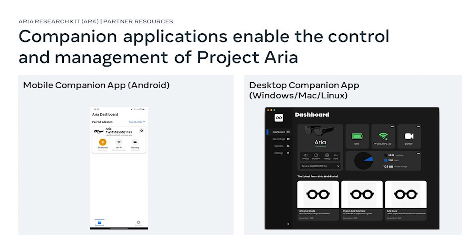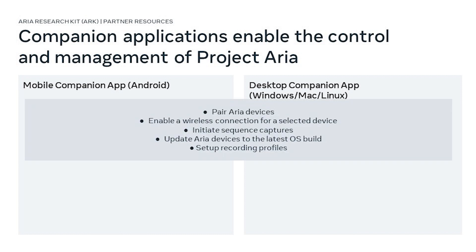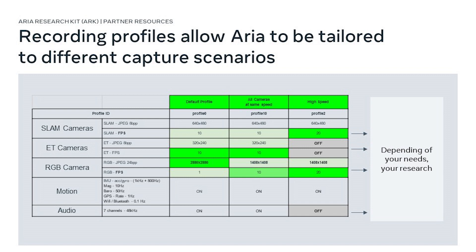There's a mobile app and a desktop app — you can see there are more buttons on the desktop. Both applications allow you to connect wirelessly to the glasses, trigger capture of sequences, and set up recording profiles to enable you to capture exactly the data you want. You can choose frame rate, resolutions, or even discard certain sensors — for example, disabling audio entirely to reduce PII concerns for some applications.